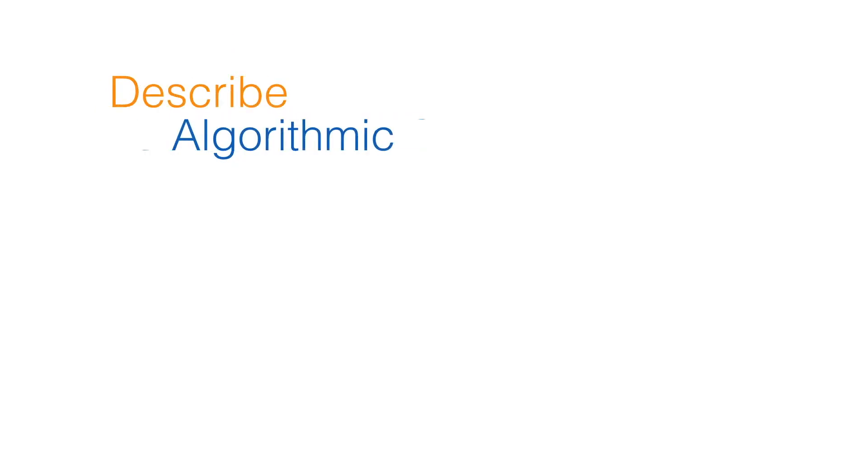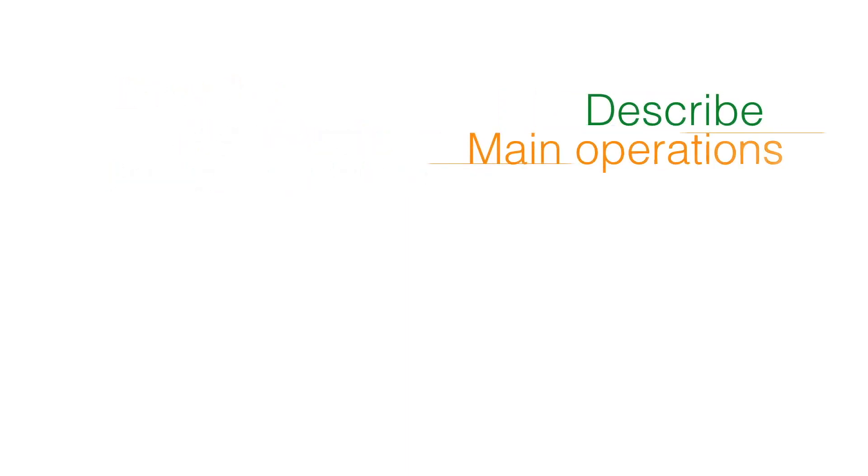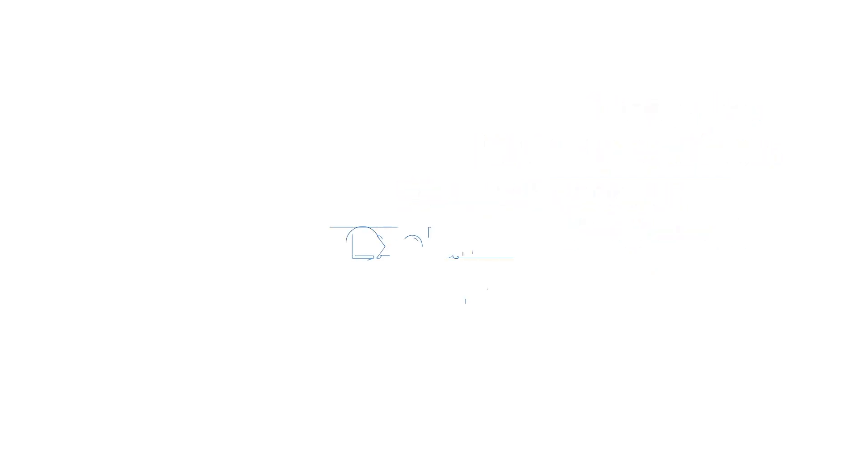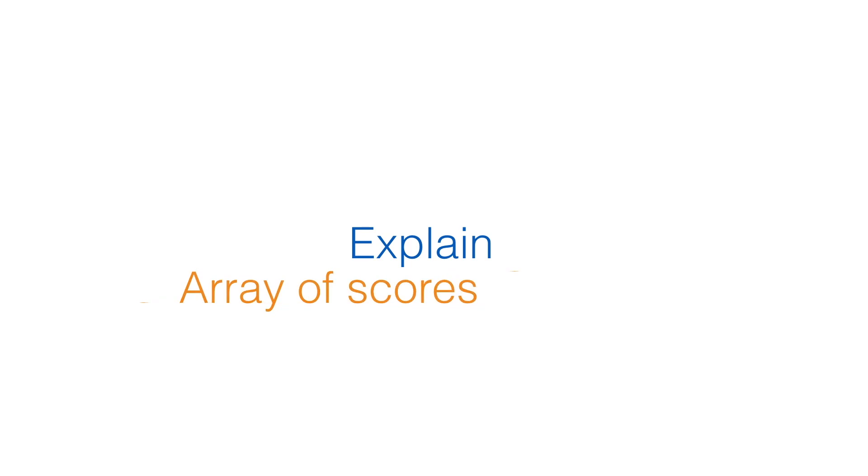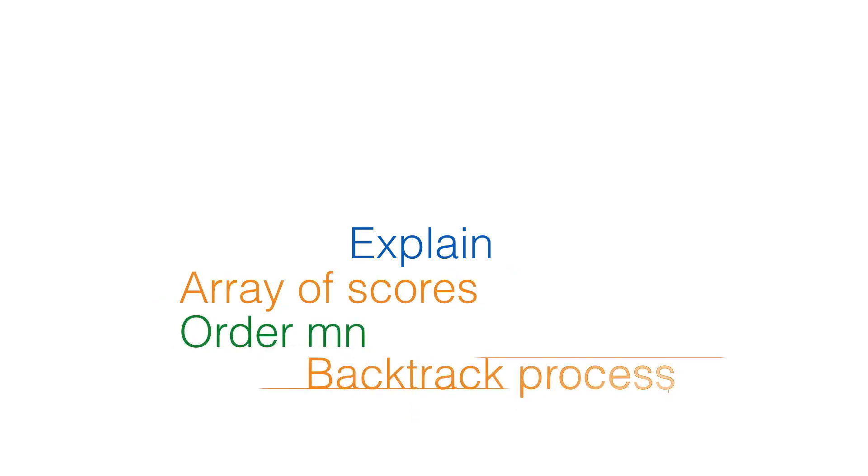Describe the algorithmic strategy used in the algorithm of Needleman and Wunsch. Describe the main operation used to compute the array of scores and the array of pointers. Explain why the computation of the array of scores is order MN and the backtrack process is order M plus N.